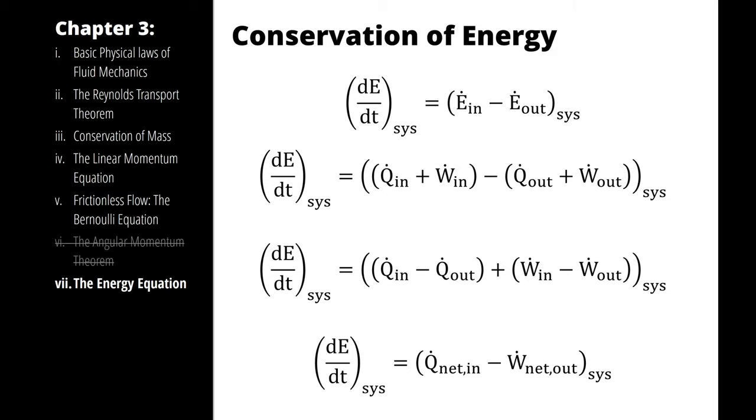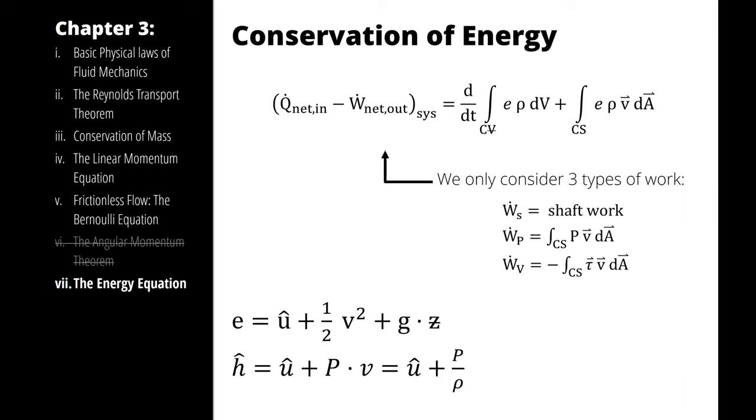So plugging those in to our simplification of the Reynolds transport theorem for energy yields net heat transfer in as a rate minus network out as a rate of our system is equal to the time rate of change of our integral of specific energy of our system times density with respect to volume plus the integral across the control surface of specific energy of our system times density times the velocity vector with respect to area.